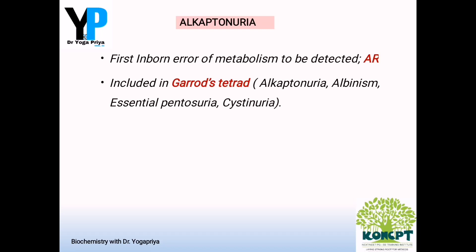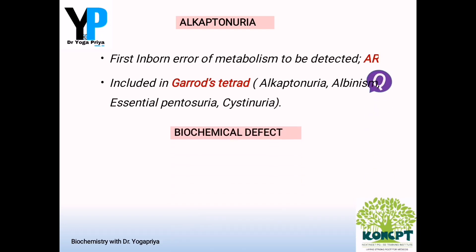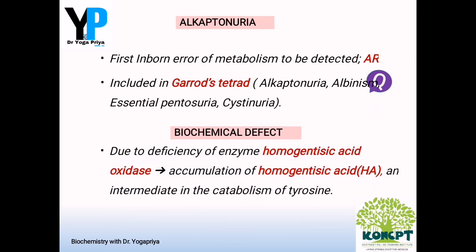So totally there are four conditions in Garrod's tetrad. The biochemical defect in alkaptonuria is mainly due to deficiency of the enzyme homogentisic acid oxidase, which leads to accumulation of the intermediate homogentisic acid. This is normally seen in the catabolism of phenylalanine and tyrosine.